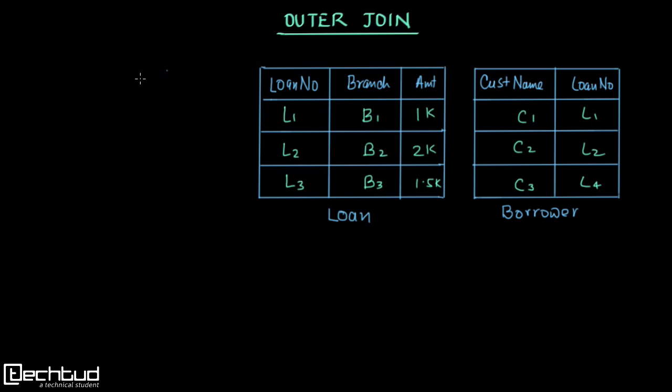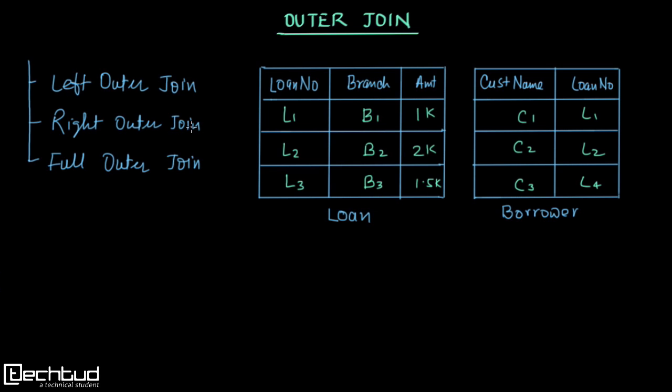Outer join has three types: the first one is left outer join, then we have right outer join, and we have full outer join.